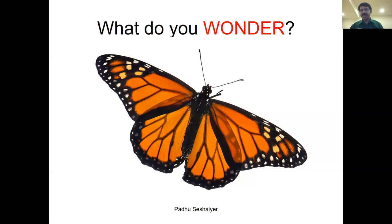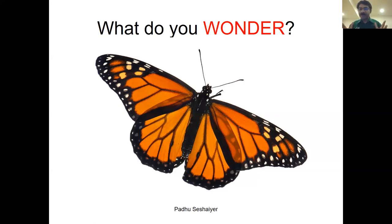Does it have six legs? Is it symmetric? What do you wonder about the life cycle? Is it real, is it alive? How fast does it go? Biochemistry of the coloring? How much does it weigh? Mala asks 'Has it been to Mexico?' — a very good clue. Someone says 'monarch' — monarch butterflies. They are indeed monarch butterflies.